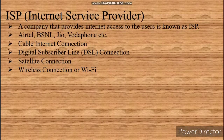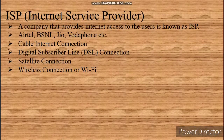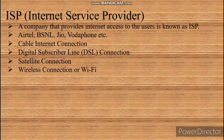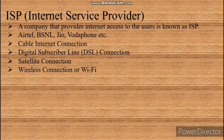When you register with an ISP, an account is created and you are provided with login details — username and password. If you want to use the internet facility, you should register with the company. The company provides a username and password, and you connect to the internet by means of your account. This way the company keeps track of your internet usage.